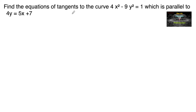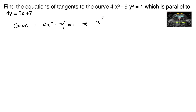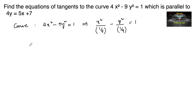Find the equations of tangents to the curve 4x² minus 9y² is equal to 1, which can also be written as x² upon (1/4) minus y² upon (1/9) is equal to 1, which is parallel to the line 4y is equal to 5x plus 7.